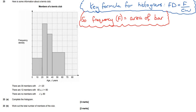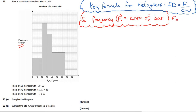Histograms — I think people are under the illusion that they're a bit tricky, but as soon as you understand this formula here, this blue one, and what it actually represents, then you'll be able to do every single type of problem. The formula is: frequency density, which is always on the left-hand side, equals the frequency — or the number of things, number of people in this case — divided by the class width. The class width is how long the bar is. The frequency, what it actually means, is the area of each bar, because we can rearrange this blue formula to give: frequency equals frequency density times class width.